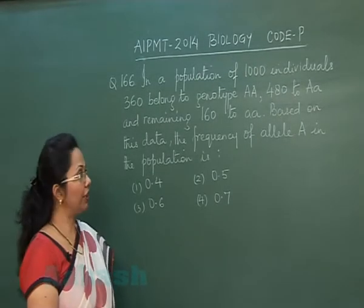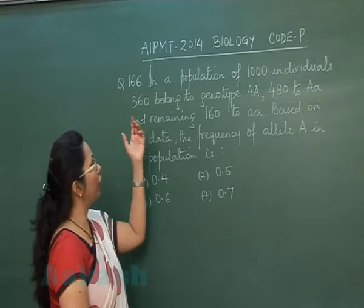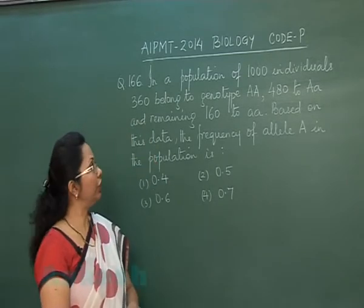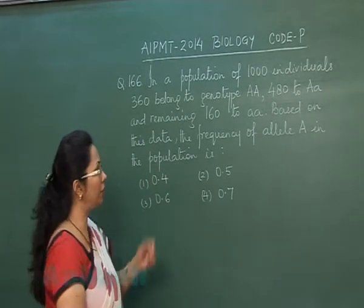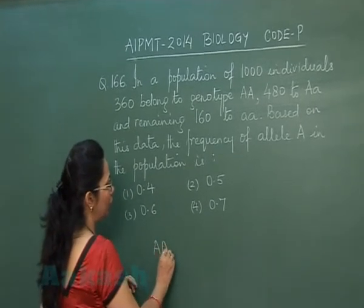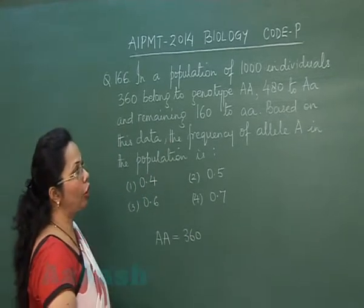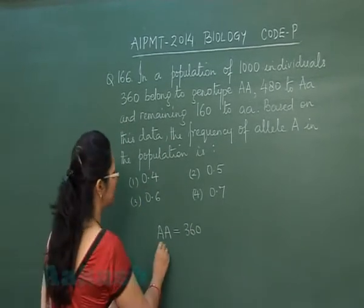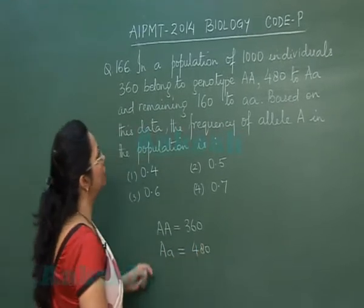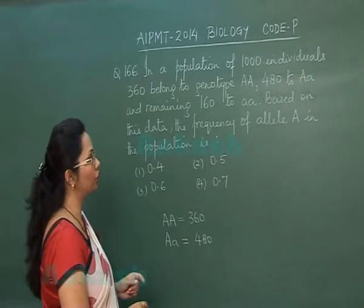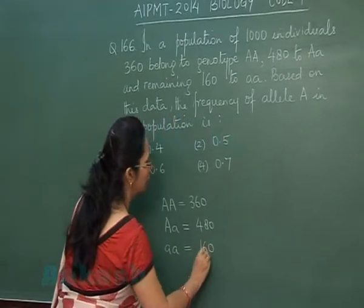In question 166, it's a problem based on Hardy-Weinberg equilibrium. In a population of 1000 individuals, 360 belong to genotype AA (dominant), 480 belong to heterozygous Aa, and the remaining 160 belong to the homozygous recessive aa.